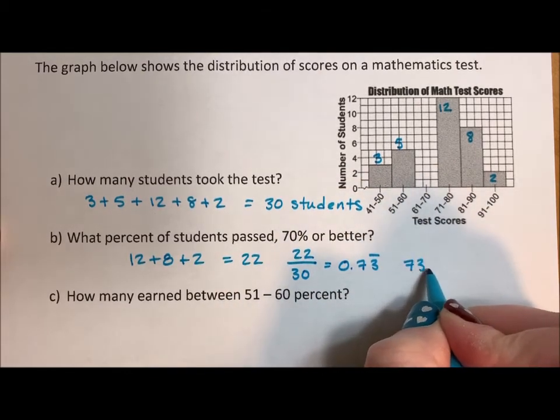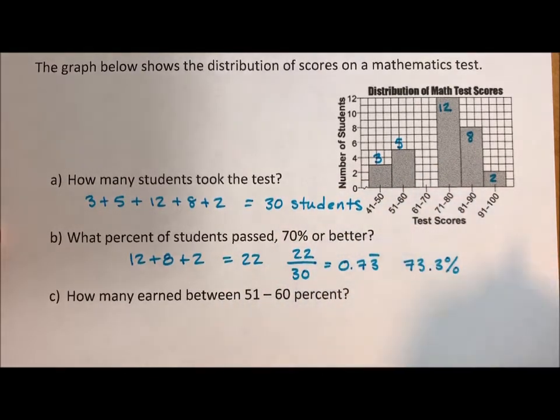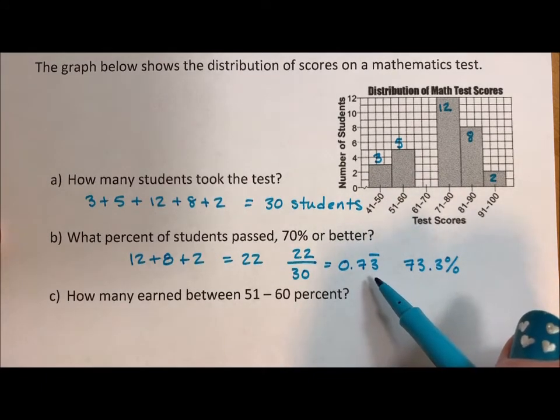But for a percent, it's going to be 73.3%. The 0.733 would be probability.